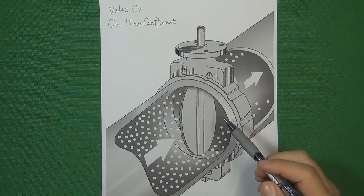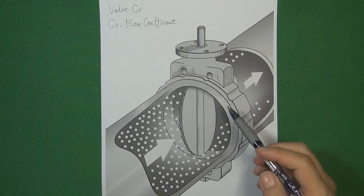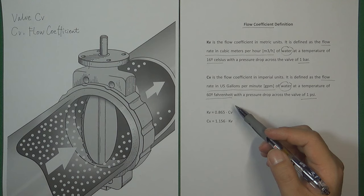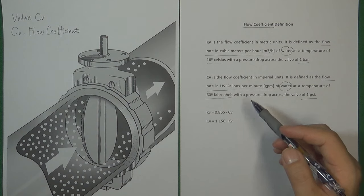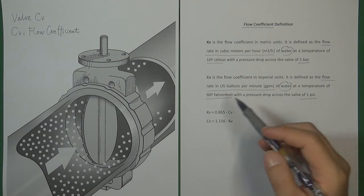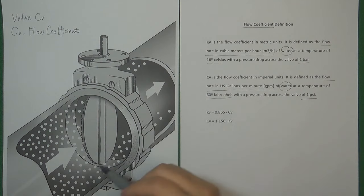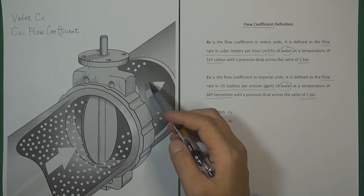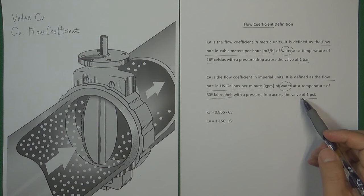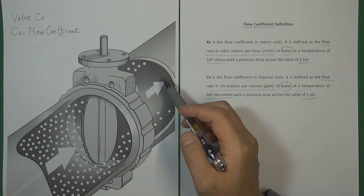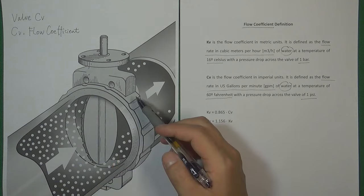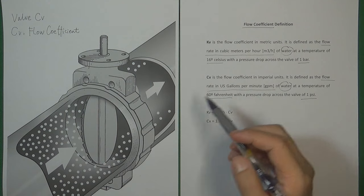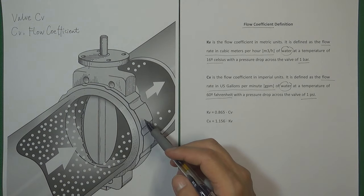Let's look at how to test a valve to get the correct valve CV. The basic principles for valve CV testing are easy to understand. We are going to use water at 60 degrees Fahrenheit as the testing medium. Then we push the water from one side to another using one psi of pressure. Then we calculate how much water transfers through the valve. For example, if in one minute 10 gallons of water transfer through the valve, then this valve's CV is 10.